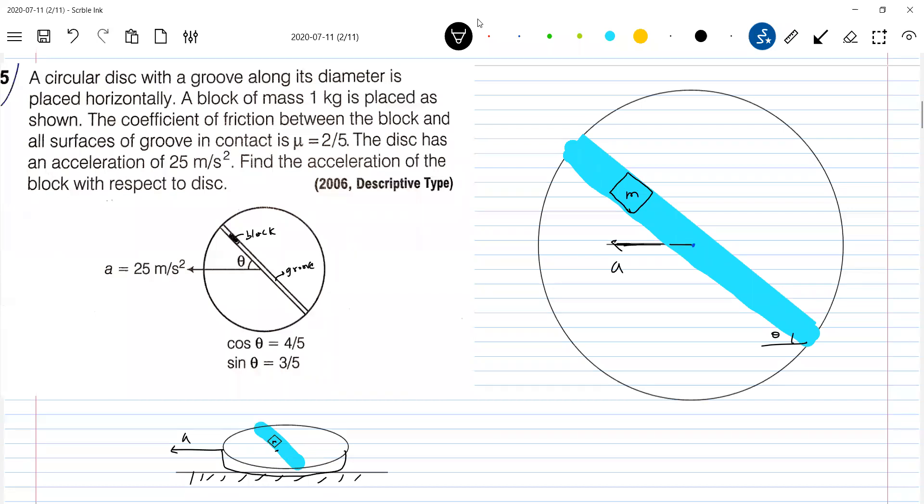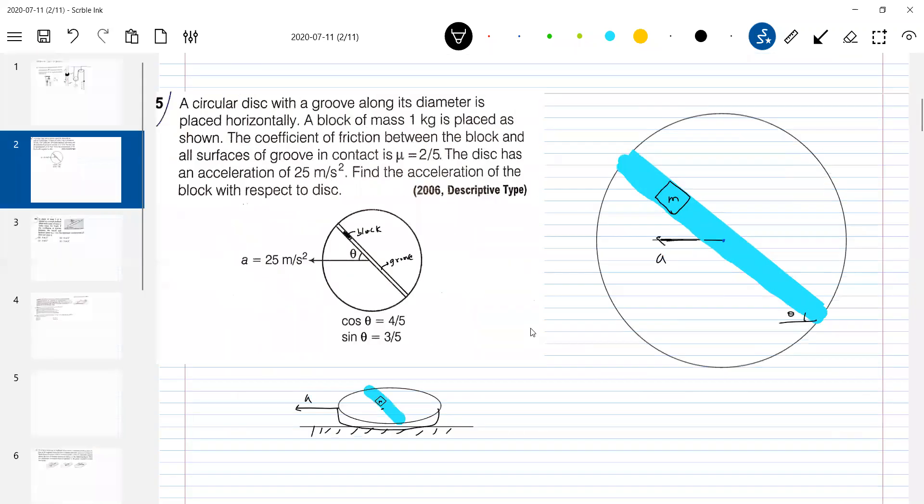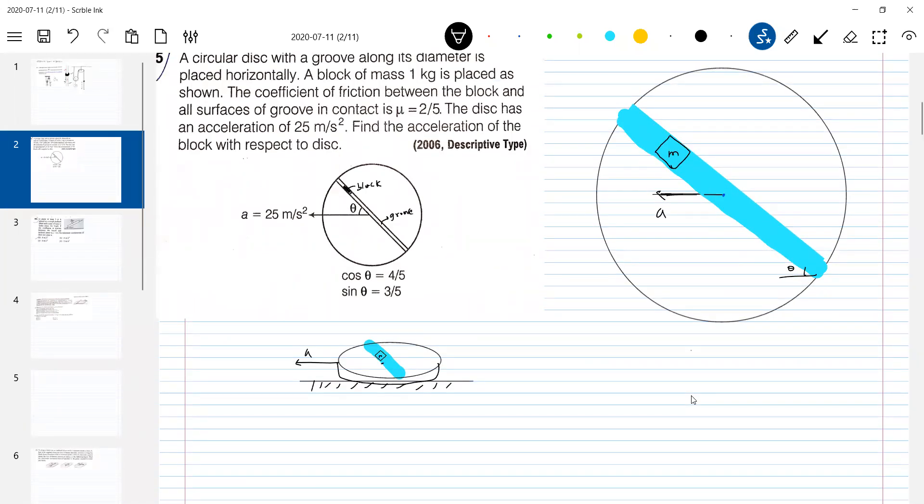And now friction - the coefficient of friction between the block and all surfaces of groove in contact is this much. How mg will act? Mg will act into the plane. So the basic diagram, let's now go for only the block now. What are the forces that will be acting? Let me discuss the problem with respect to the plane of the disk.